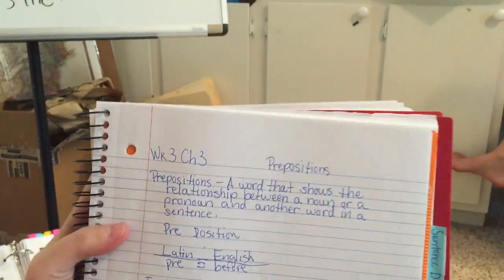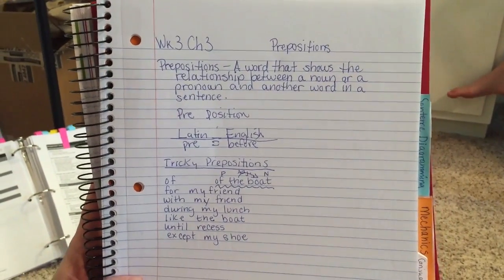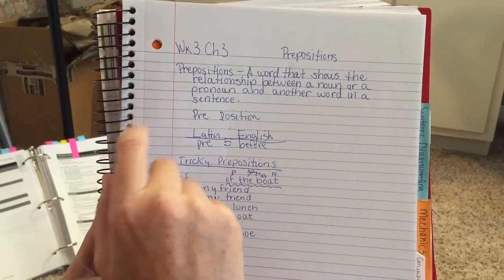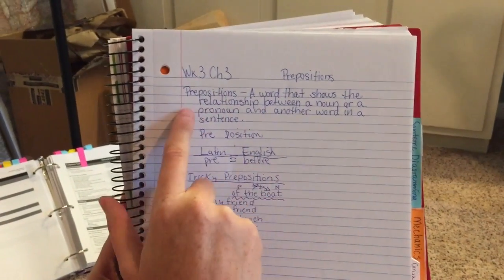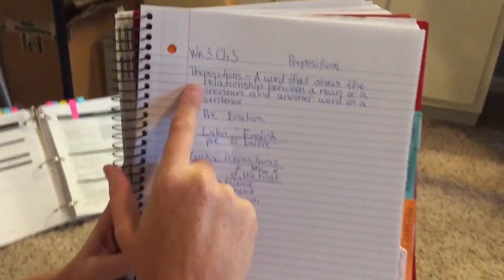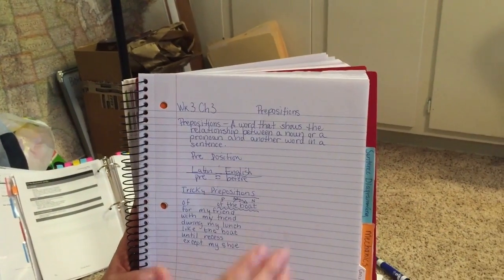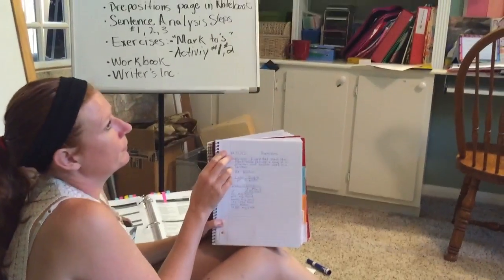What do we need? Behind parts of speech — good question. So, week 3, chapter 3, prepositions, behind parts of speech. I want you to write 'prepositions' and then the definition: a word that shows the relationship between a noun or a pronoun and another word in the sentence. That's all I really want you to write. At this point you can pause your video and make sure you have that done.